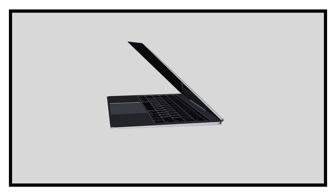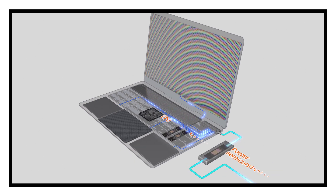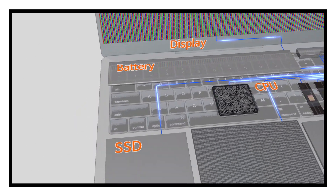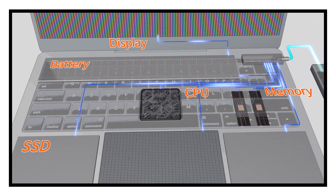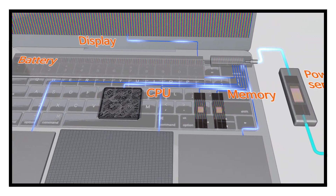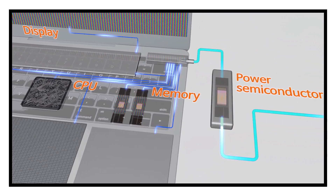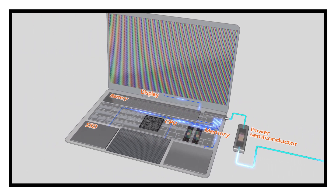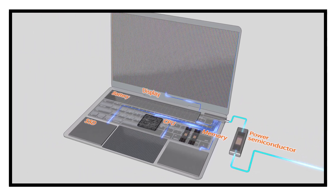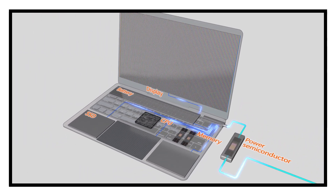The supplied electric power in your home is not directly usable for operating the home appliance because the level of the voltage is normally higher than the required voltage level. The power semiconductor converts the voltage level to a suitable level to operate each component of the device.